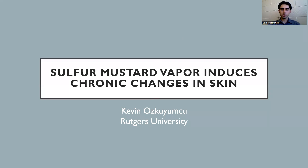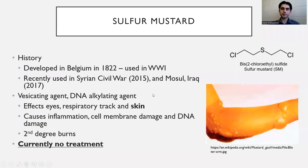Hello, my name is Kevin Eskiumjit. I am going to be discussing the chronic changes induced by sulfur mustard vapor in the skin. Sulfur mustard is a chemical warfare agent primarily used during World War I, and even recently used during the Syrian Civil War and in Mosul, Iraq in 2015 and 2017.